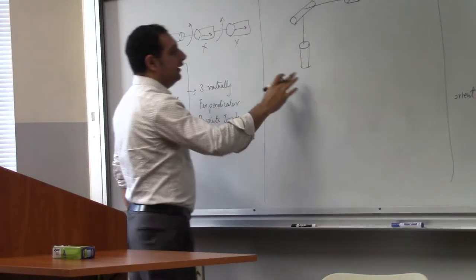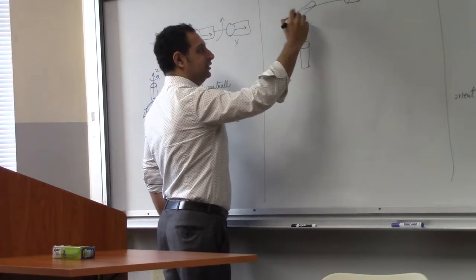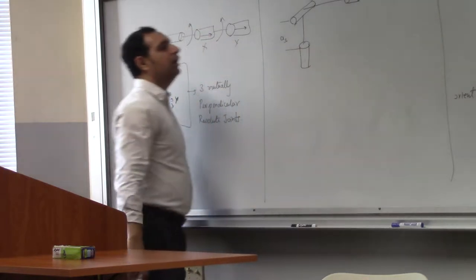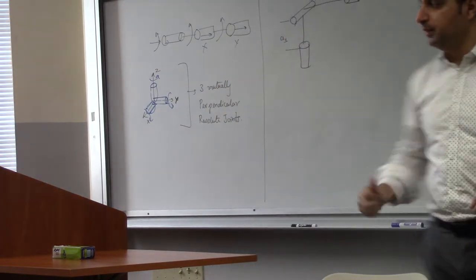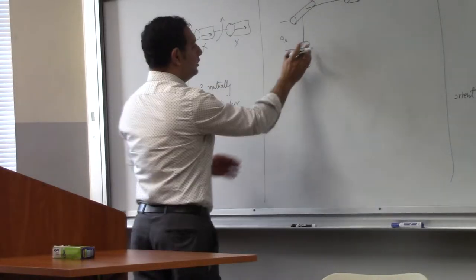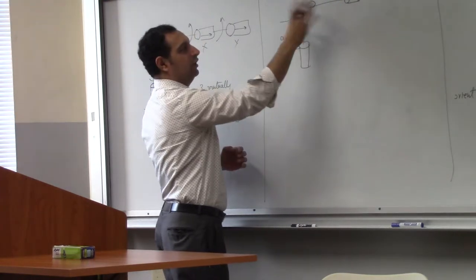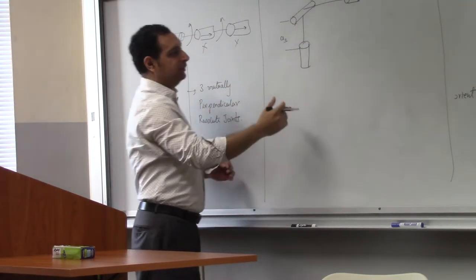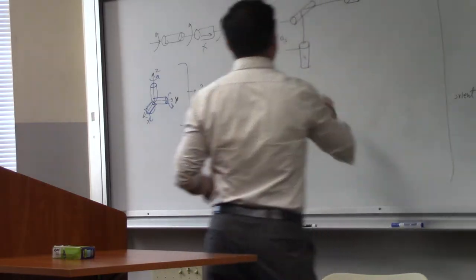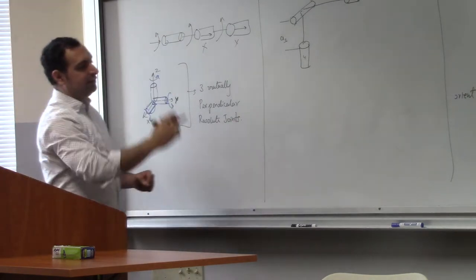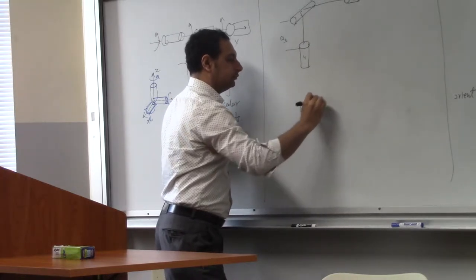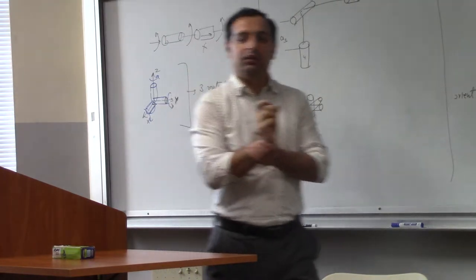Let's say this is the first axis, then the second one, then the third one. So one is out of the board, one is in line with the board, and one is vertical — all three mutually perpendicular. Now, if there's a distance between them, the first three links of the manipulator are already generating displacement. You don't want to complicate it further by adding link length here, because when this rotates, the rest of the arm will also rotate and create more displacement.